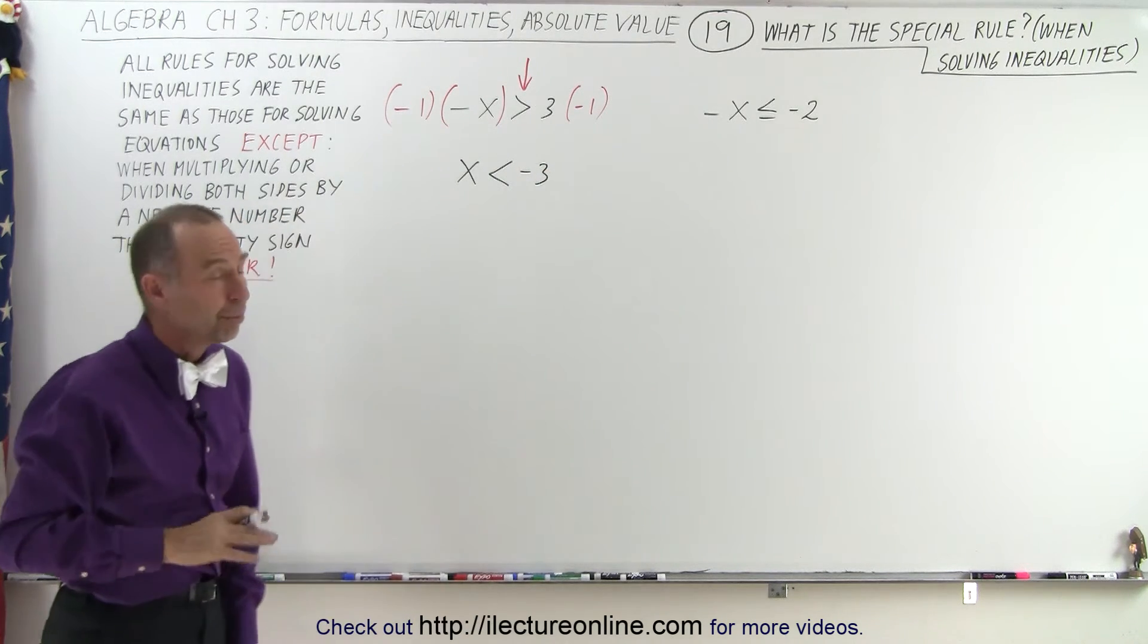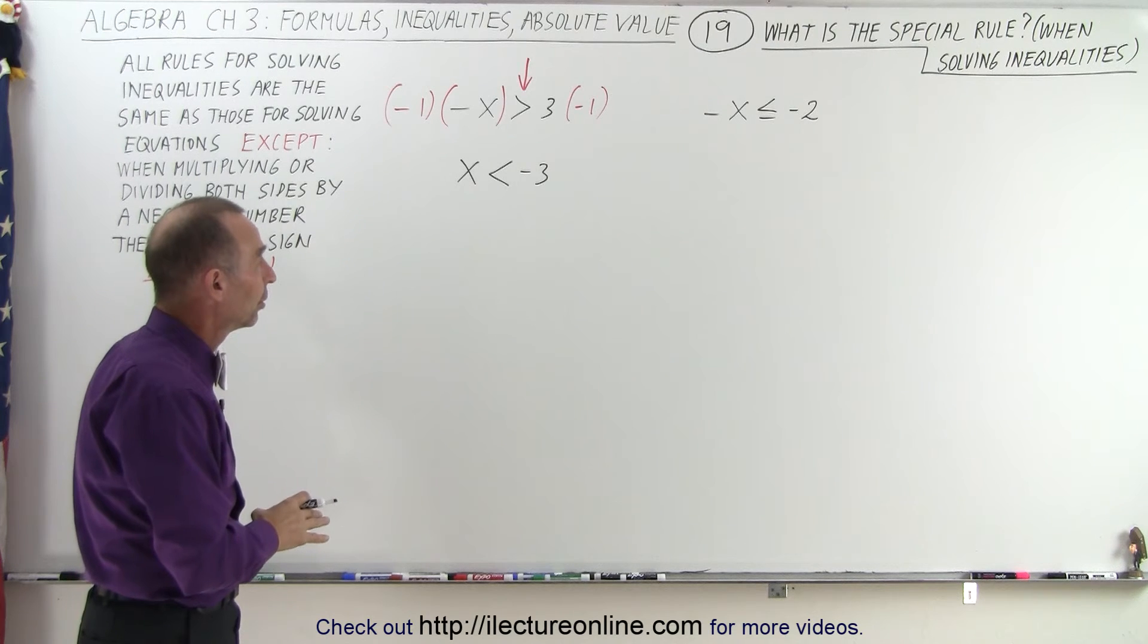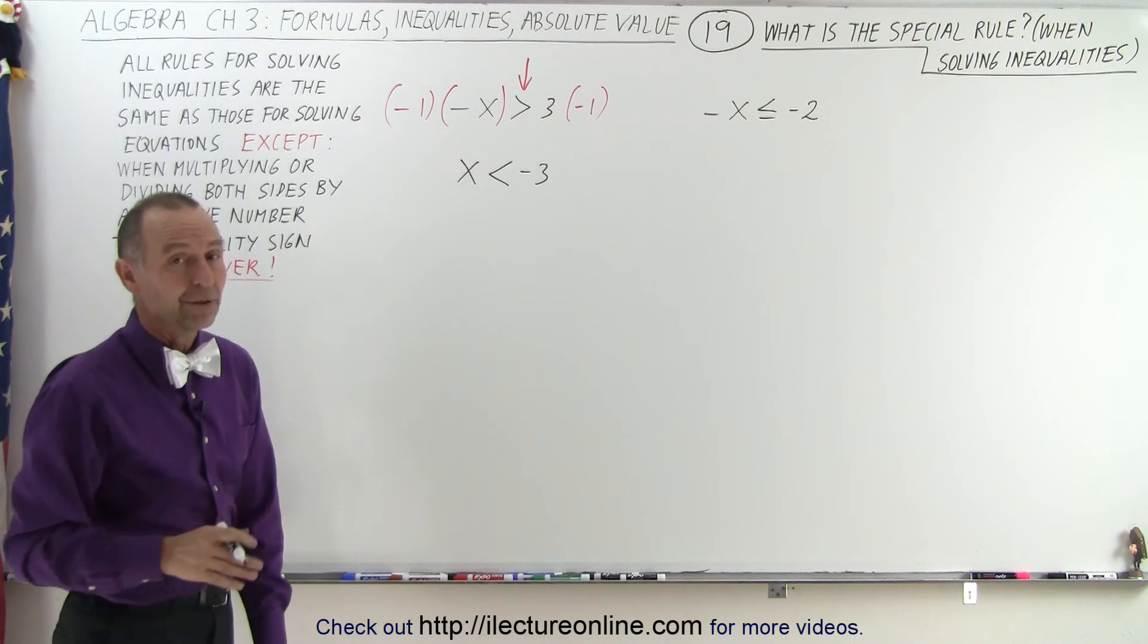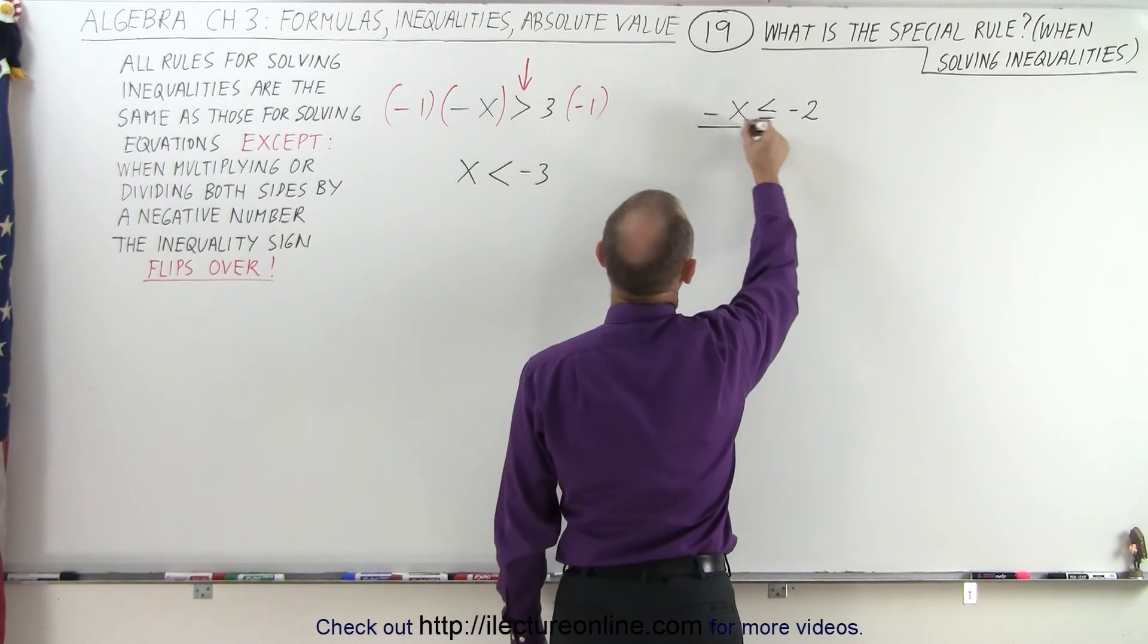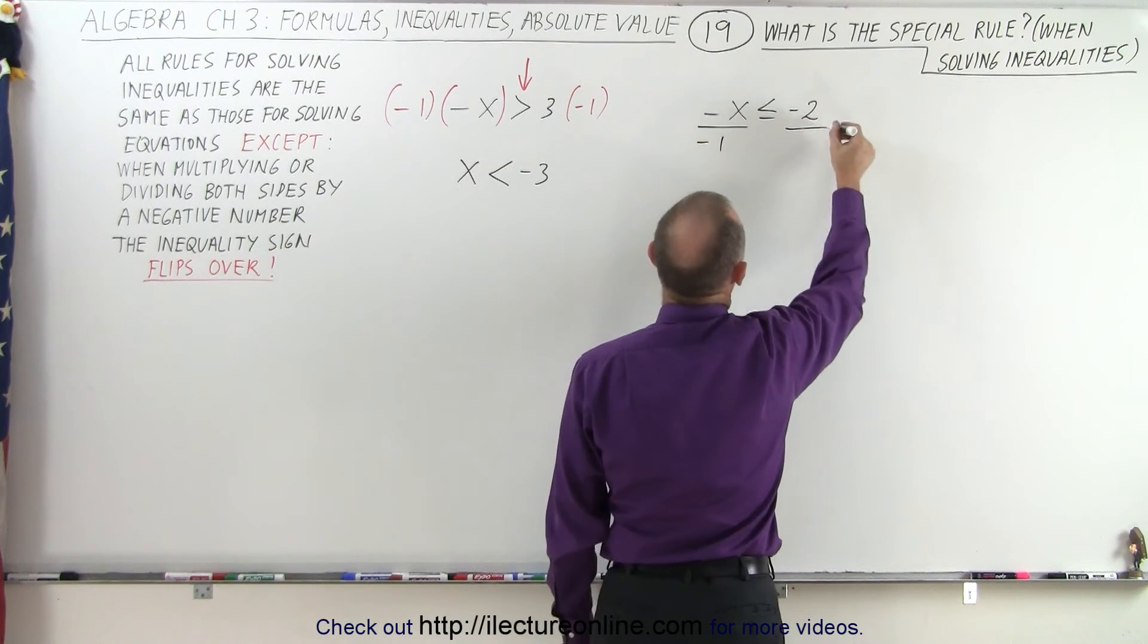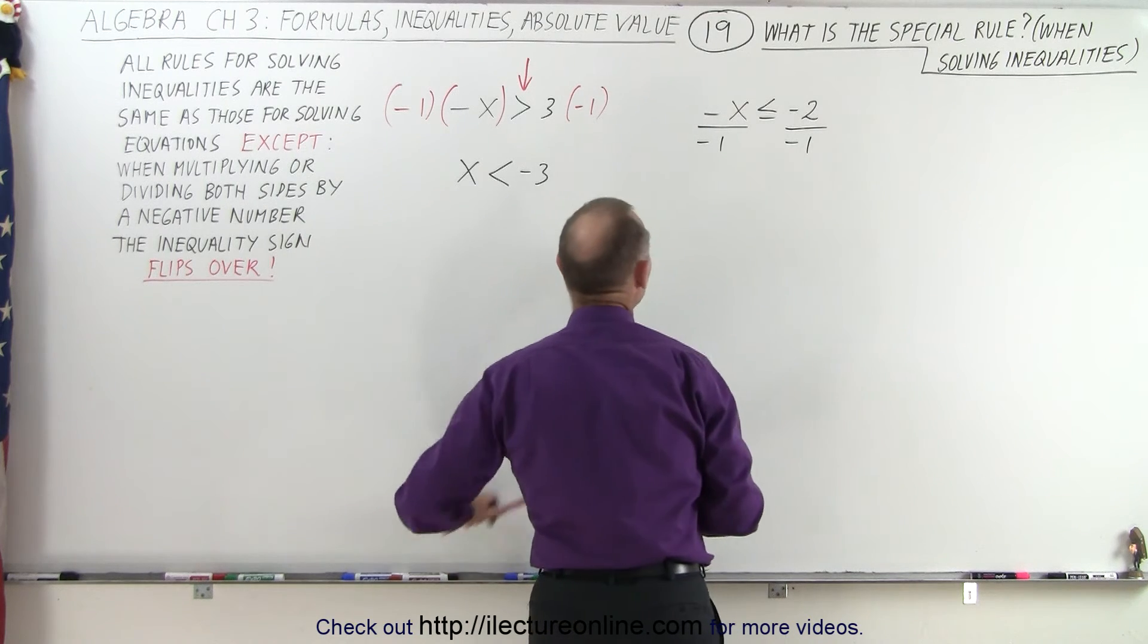So notice, when you multiply or divide by a negative number, the inequality sign simply flips over. We can do the same over here. Let's divide the left side by negative 1. We're going to divide the right side by negative 1. But if we do that, we're going to have to flip over the inequality sign.